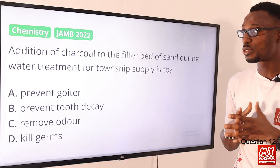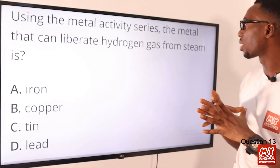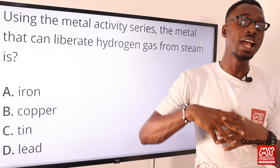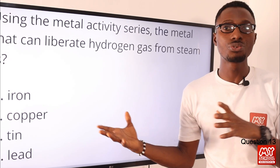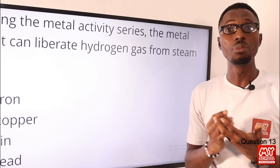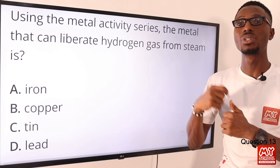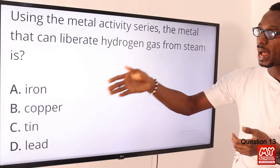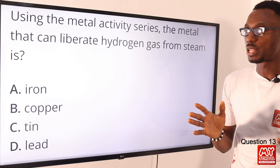The correct option is option C — to remove odor. Question thirteen: using the metal activity series, the metal that can liberate hydrogen gas from steam is what? Some metals react with cold water to liberate hydrogen gas, but some only respond to steam when their temperature is raised. Such metals include magnesium, aluminum, zinc, and iron — these react with steam to liberate hydrogen gas and form metal oxides. Iron is the correct option here; copper, tin, and lead do not react with cold water or steam. Option A for iron.